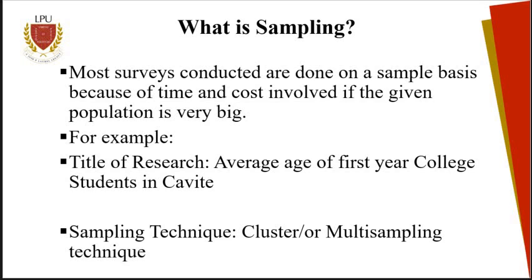We know that sampling is used when the population is very big and that it will be difficult and expensive to collect data. For instance, if I'm going to conduct a survey about the average age of first-year college students in Cavite, can you imagine how many schools I would be visiting just to find the average age? So I determined here that I'm going to use what we call cluster sampling, or I could use a multi-sampling technique.